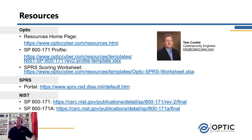As promised, we have some resources here to help you in completing the self-assessment. From the Optic website, we have a 171 profile that will help you create an SSP if you don't already have one, and the SPRS worksheet we talked about today is also provided to help automate the scoring approach for you. We've also included a link to the SPRS portal, as well as links to additional information provided by NIST on SP 800-171 and how to perform an assessment against SP 800-171. Thank you.